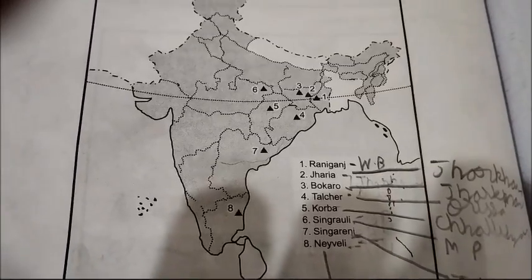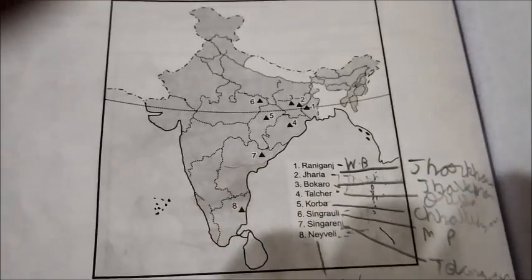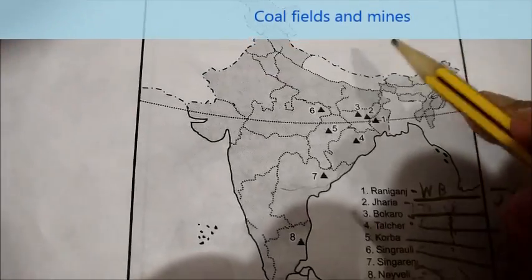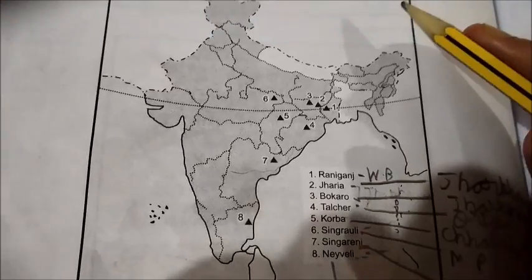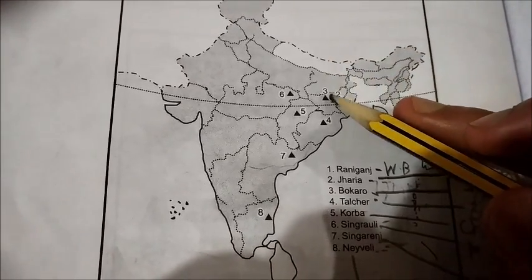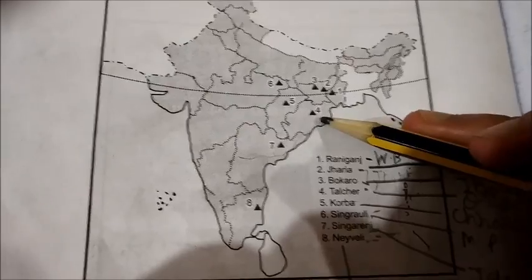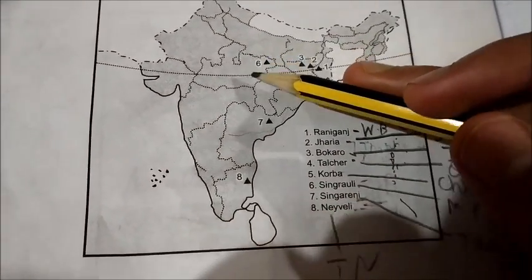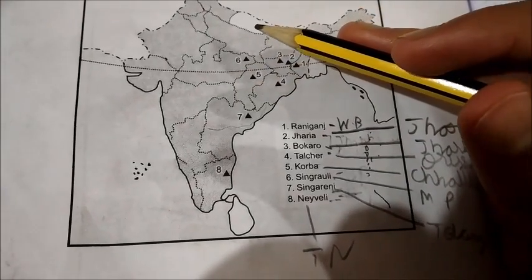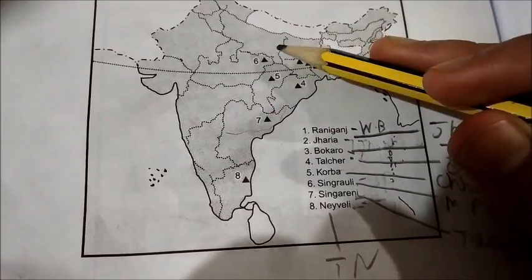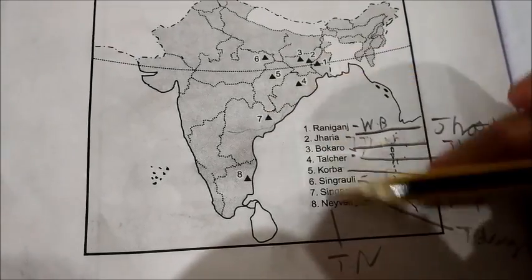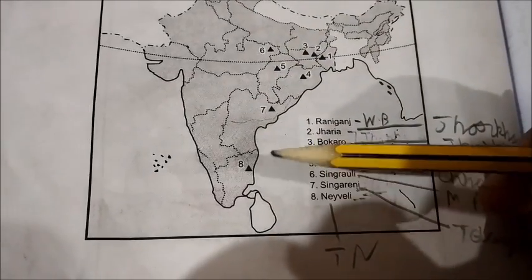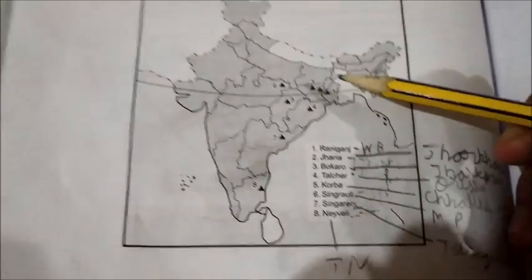Now let's look at the various coal fields and mines. Raniganj is in West Bengal. Jharia and Bokaro are in Jharkhand. Talcher is in Orissa. Korba is in Chhattisgarh. Singrauli is in Madhya Pradesh. Note the difference: Singareni is in Telangana — not Andhra Pradesh. And Neyveli is in Tamil Nadu.